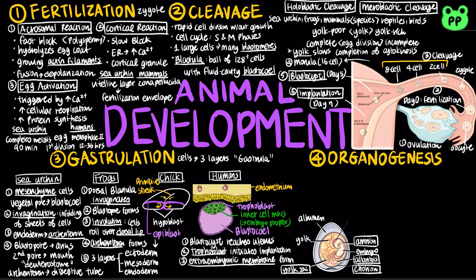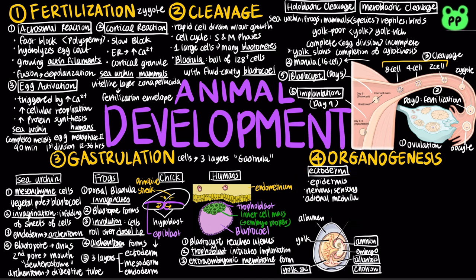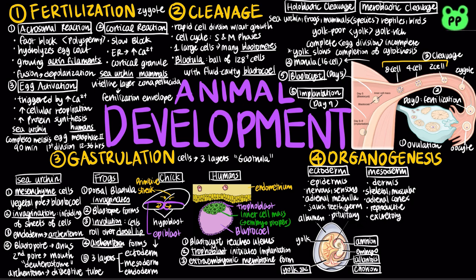After gastrulation, organogenesis takes place, in which various regions of the germ layers develop into rudimentary organs. In vertebrates, the ectoderm develops into the epidermis, the nervous system and sensory system, the adrenal medulla, jaws, teeth, germ cells, and the pituitary. The mesoderm develops into the dermis of the skin, skeletal and muscular systems, the adrenal cortex, the excretory and reproductive systems, and the circulatory and lymphatic systems. The endoderm develops into the epithelial lining of the digestive tract and many internal organs, as well as the thymus, thyroid, and parathyroid glands.